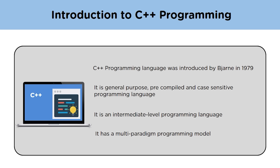C++ is a popular programming language introduced by John Stroustrup in the year 1979. The aim was to make a dynamic language that is efficient and has some additional features to C. Initially it was called 'C with Classes' as it was an extension to C language, but later renamed as C++. It is a general-purpose, case-sensitive language.